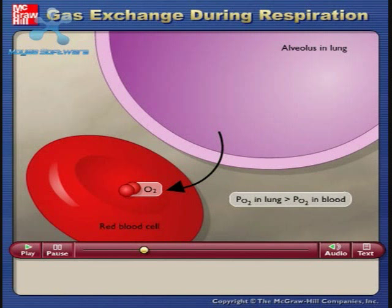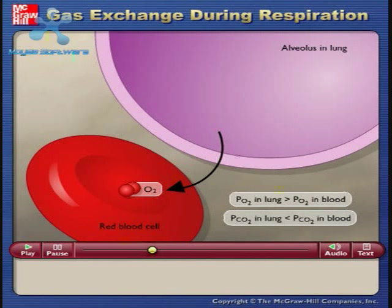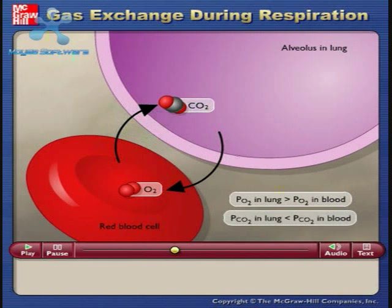Also, the partial pressure of carbon dioxide, pCO2, in the air in the lungs is less than the pCO2 in the blood, so carbon dioxide diffuses out from red blood cells and into the air in the lungs.